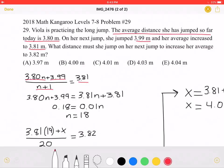We can cross-multiply to get that 3.8n plus 3.99 equals 3.81n plus 3.81. We can further simplify to get that 0.81 equals 0.01n, and then we can divide to get that n equals 18.